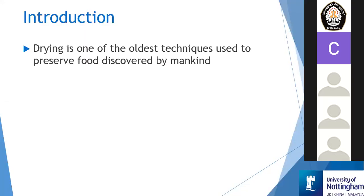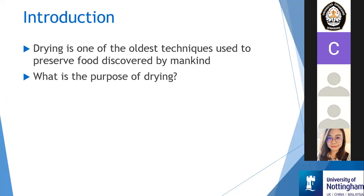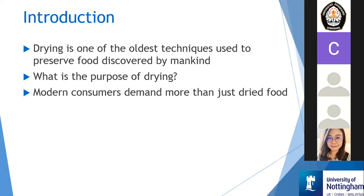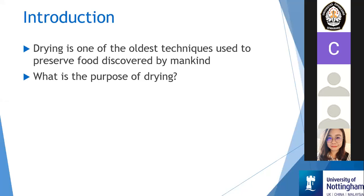Let us start with the introduction. Drying is one of the oldest techniques used to preserve food, discovered by mankind. We are quite familiar with drying because we do this every day, even at home. After we wash our laundry, we need to dry it outside, or sometimes we even dry food products outside under the sun. The purpose of drying is to get rid of moisture to get a dry product.